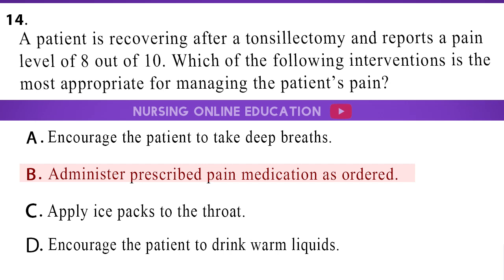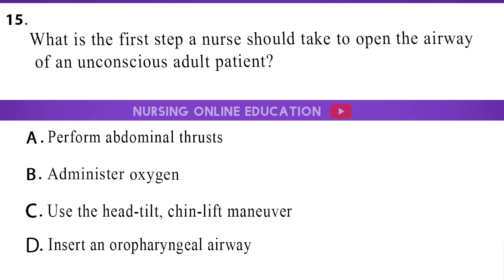The answer is option B: Administer prescribed pain medication as ordered. What is the first step a nurse should take to open the airway of an unconscious adult patient? A. Perform abdominal thrusts. B. Administer oxygen. C. Use the head tilt, chin lift maneuver. D. Insert an oropharyngeal airway.